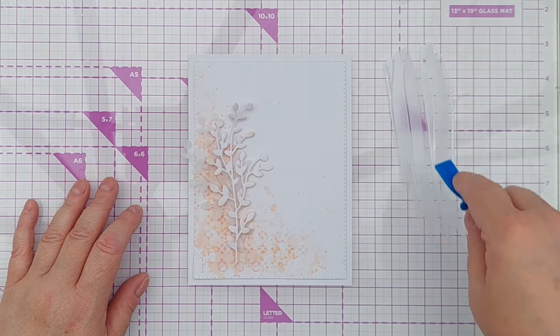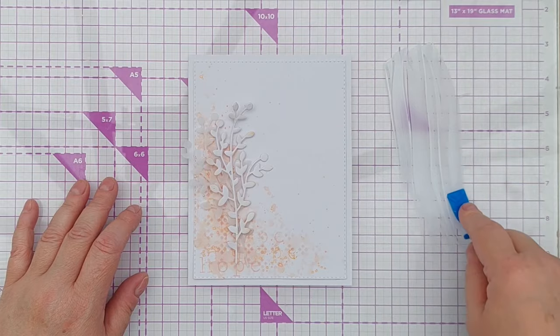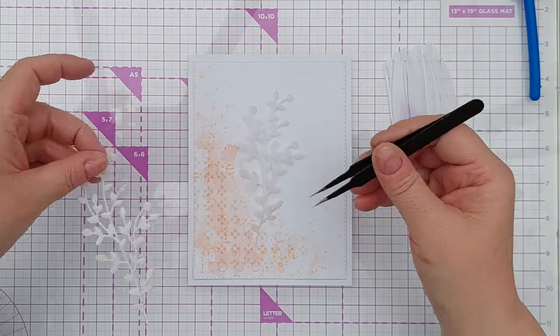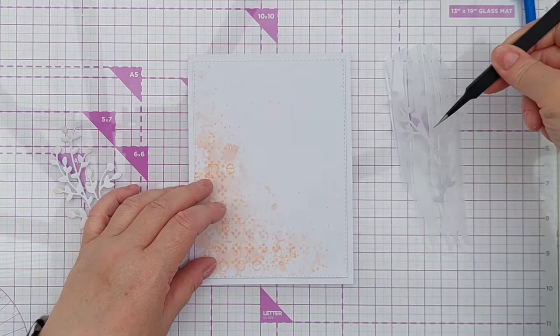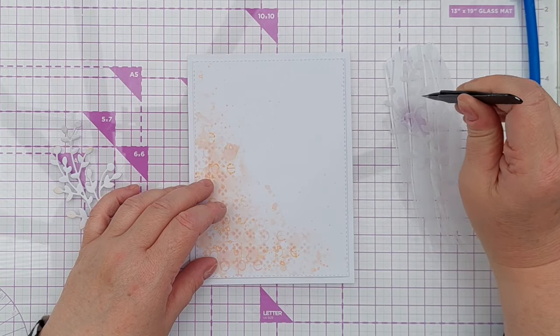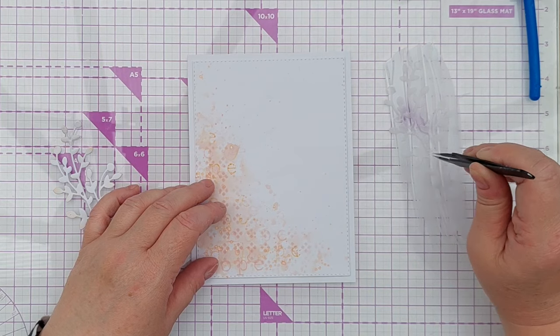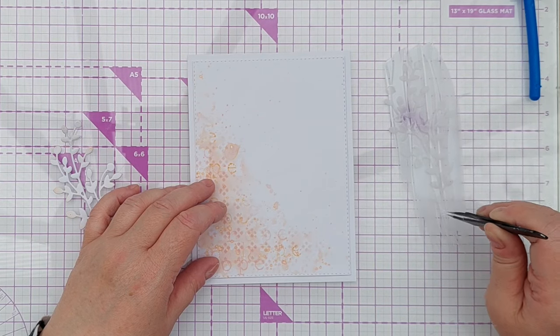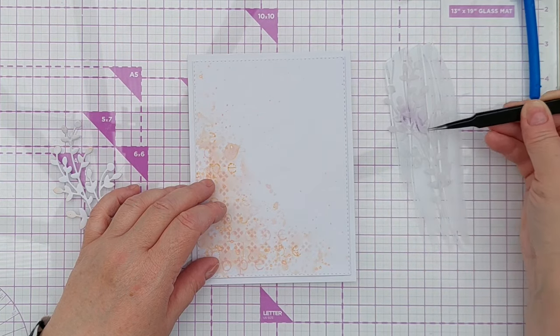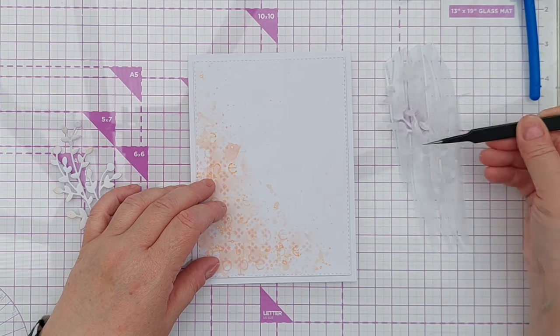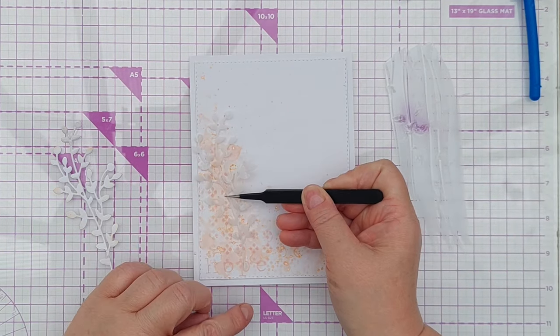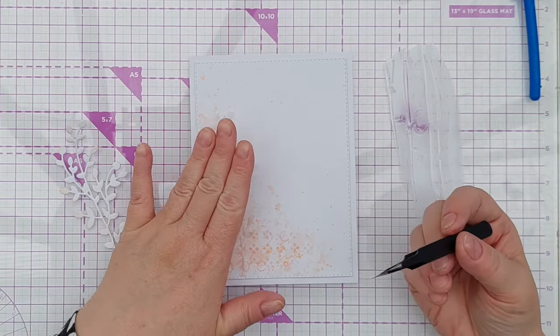So I stuck the vellum down with the high tack glue and then I stuck the cardstock branch on top of that slightly offset so you can still see that vellum branch peeking out and I did make sure to have some of the leaves on the left hand side hanging over the edge of the panel just to break up all the straight edges there.